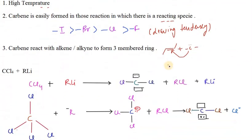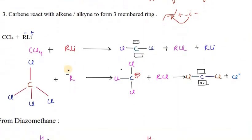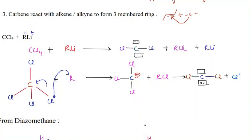The second method is CCl4 plus RLi (an organolithium compound). RLi has R with a negative charge and lithium with a positive charge. When R, the alkyl group with negative charge, attacks the chlorine, it forms an R-Cl bond and the electrons shift towards carbon, creating a negative charge. When higher temperature is applied, the chlorine leaves the solution and there is again formation of singlet carbene.